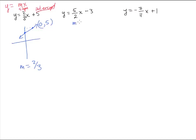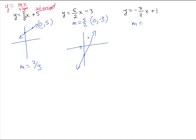Next one: the slope is five-halves and the intercept gives us the point zero, negative three. We go up five over two to find the next point, and we graph the line. Then the next one: slope is negative seven-elevenths — that's nice — and the starting point is zero, one. We don't have to go through the whole process to find the slope; we can just pull it right out of the equation.